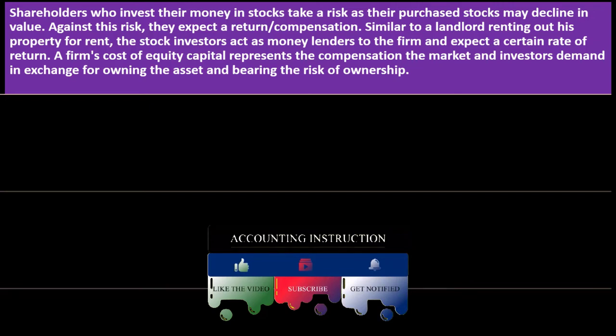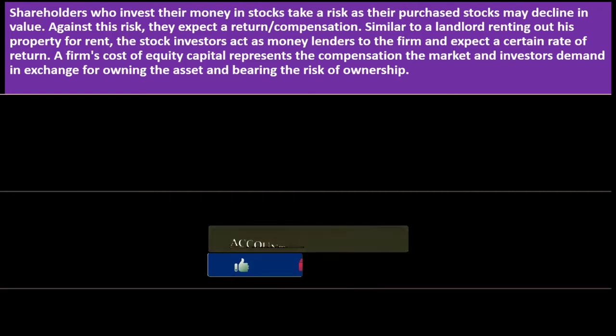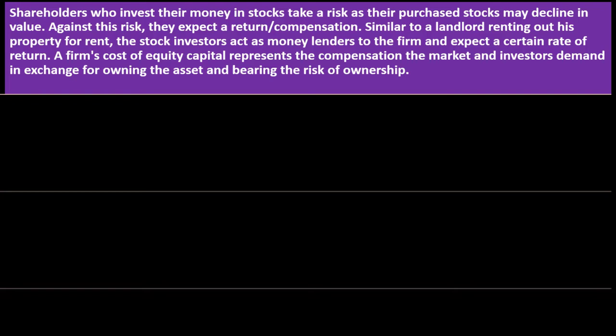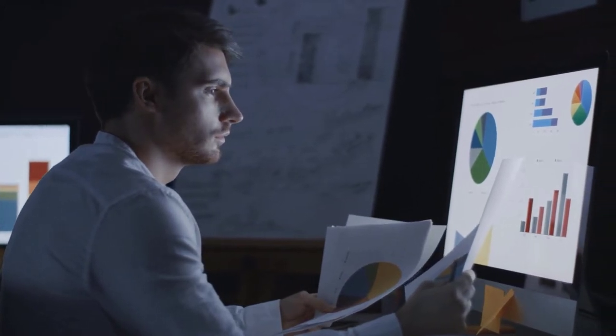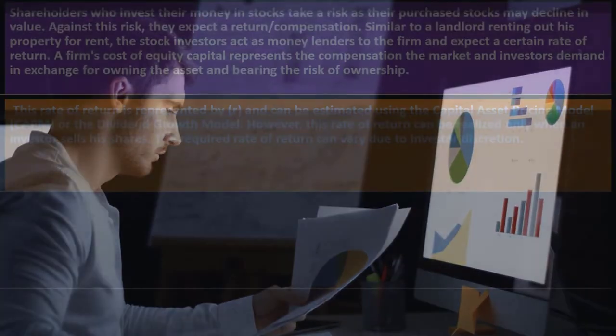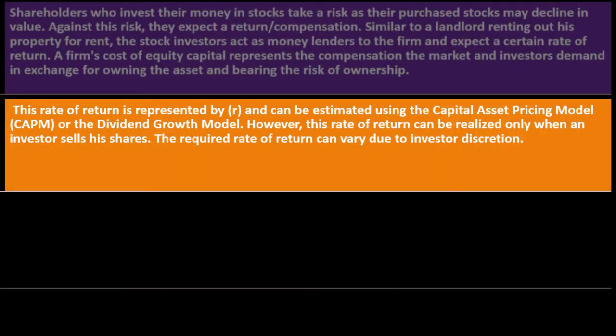Shareholders who invest in stocks take a risk — their stock may decline in value. Against this risk they expect a return compensation, similar to a landlord renting out property for rent. A firm's cost of equity capital represents the compensation the market and investors demand in exchange for owning the asset and bearing the risk of ownership. The discount rate we use equals the cost of our capital — essentially what we could invest in alternatively. This rate of return is represented by r and can be established using the Capital Asset Pricing Model (CAPM) or the dividend growth model.